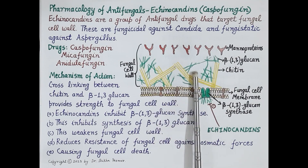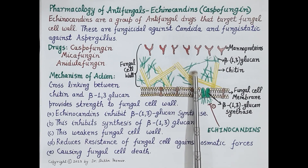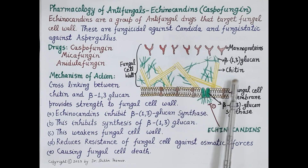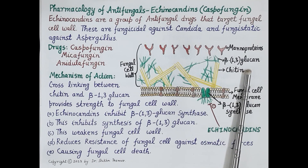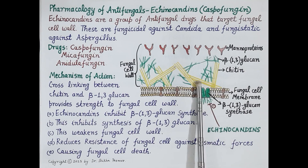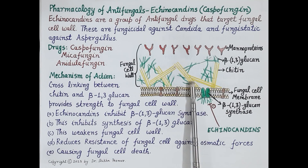This cell wall is absent in human cells. Chitin and beta-1,3 glucan are cross-linked, as seen in the figure, and this cross-linking provides strength and integrity to the fungal cell wall.